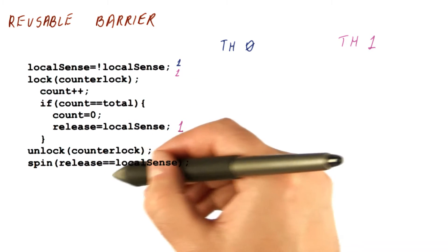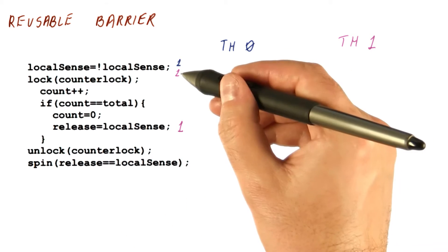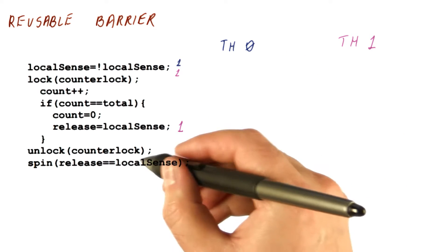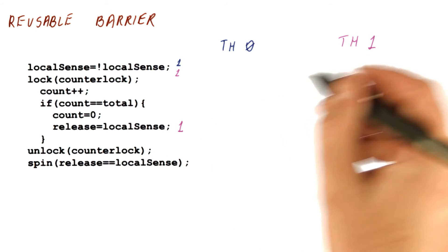And thread one enters this wait here. It's waiting now for the release to become what it thinks local sense is, which is one. So it's going to spin until somebody puts one into the release. Eventually thread one does that.